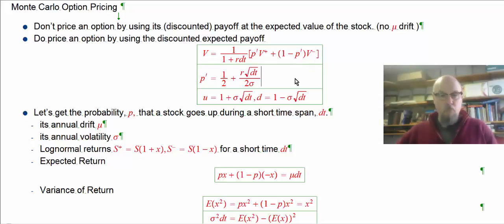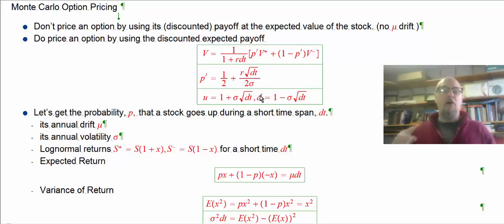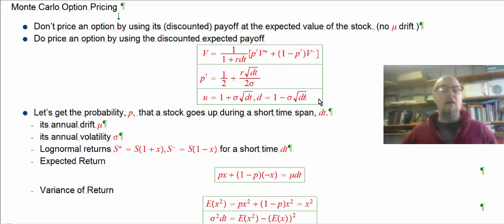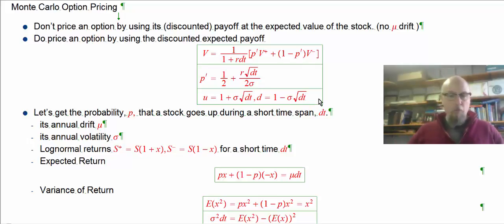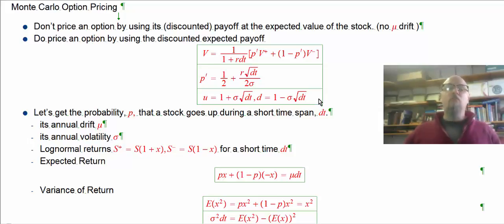The U and D values are the factor we multiplied the stock by: if the stock went up it was 1 + x, or 1 − x going down. This assumes the stock is moving in a log-normal fashion — that our returns will be normally distributed. So let's redo some of those calculations.